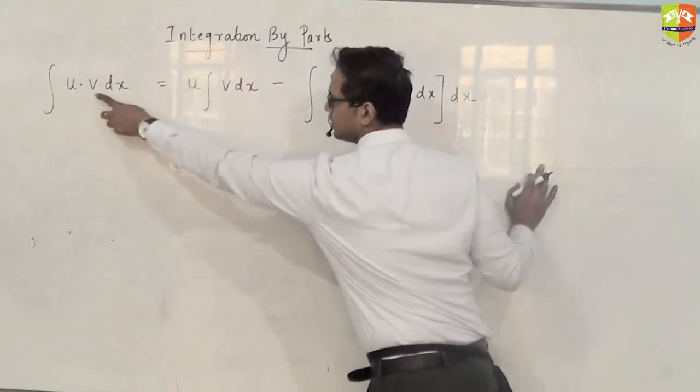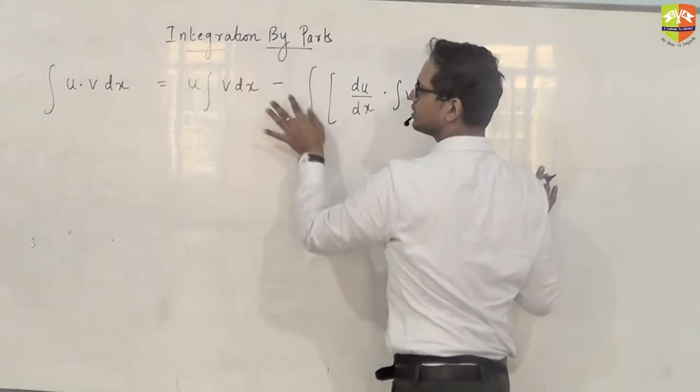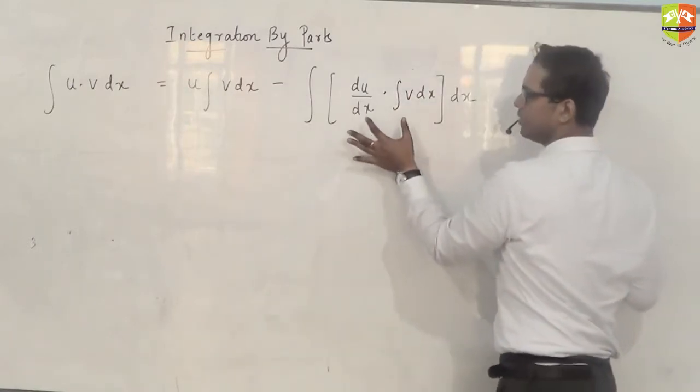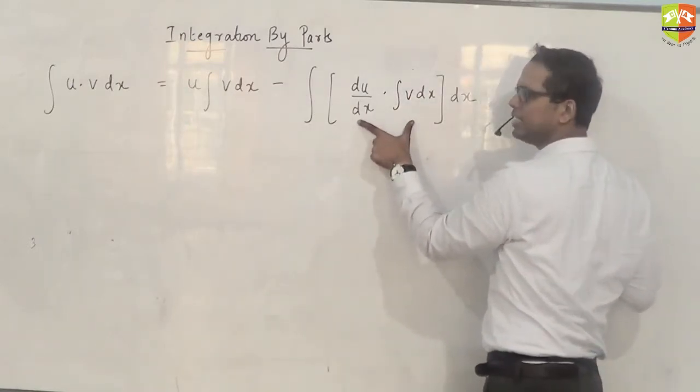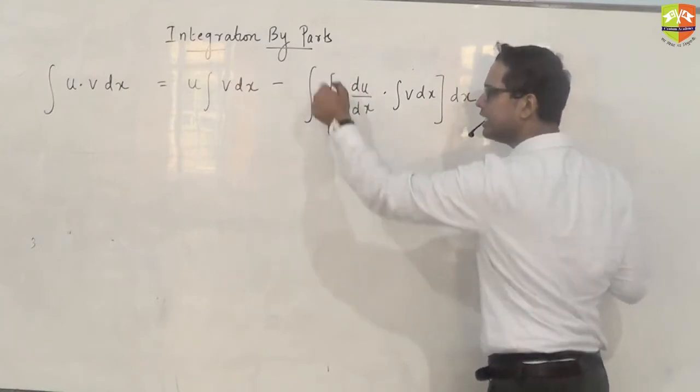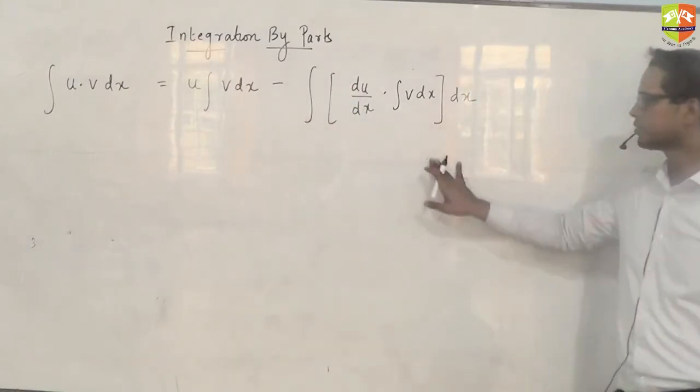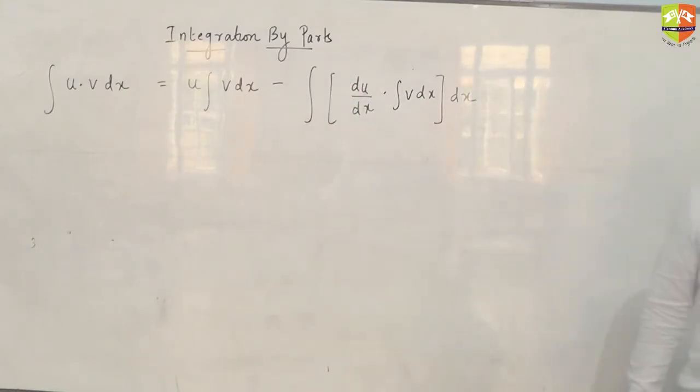The formula is integral of u·v dx equals u times integral of v dx minus integral of (du/dx times integral of v dx) dx. This rule is called integration by parts.